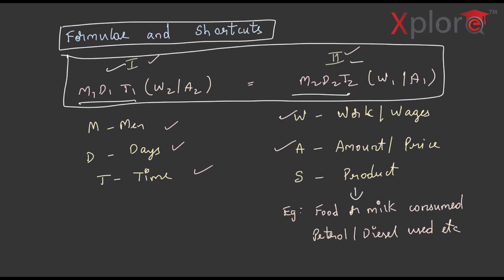All the elements in statement 1 are written on one side and all the elements of statement 2 are written on other side except wages or work done or amount or prices or cost of items if given in the question. They are only interchanged like what we have done here. You will be able to get a superior understanding when we use this formula in solving the problems. So, let us try to do this.